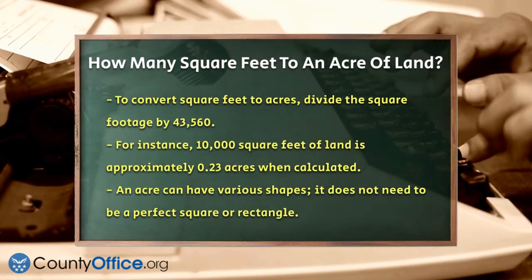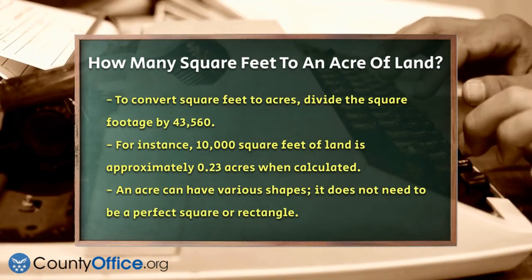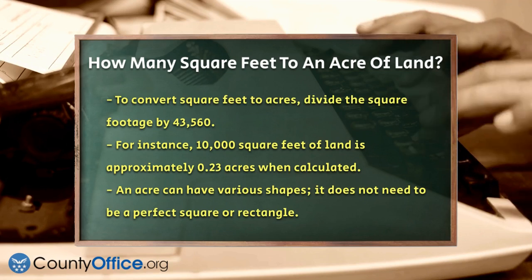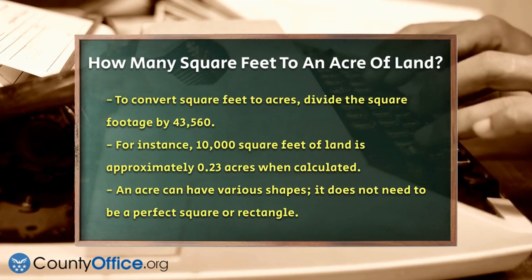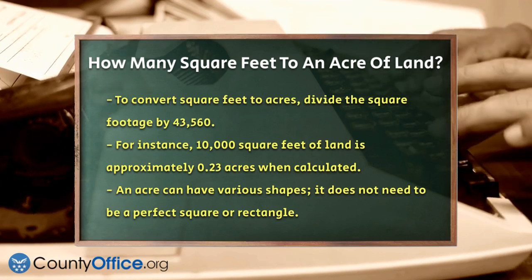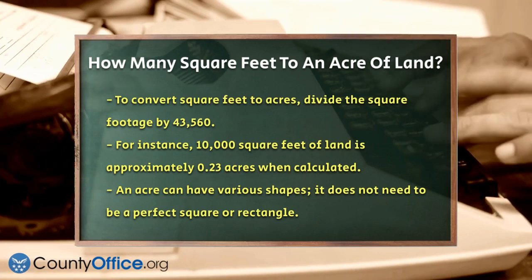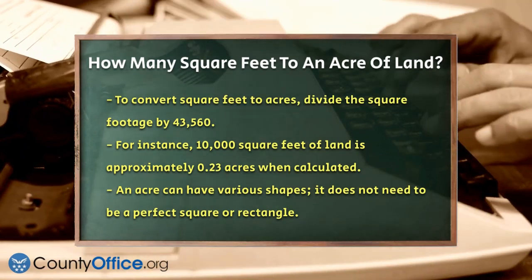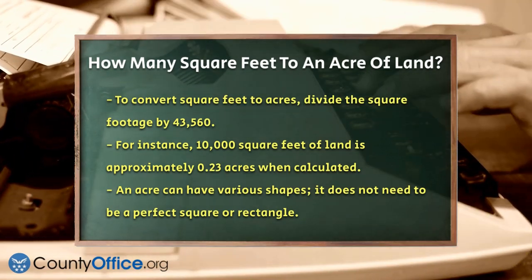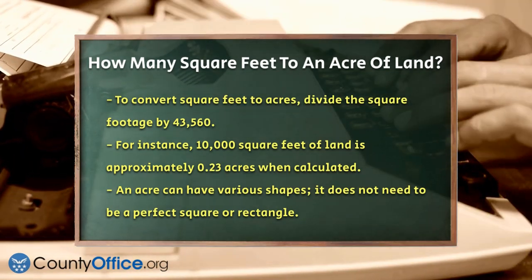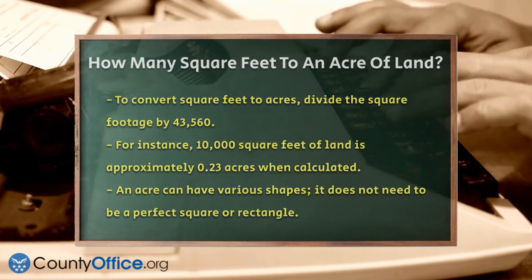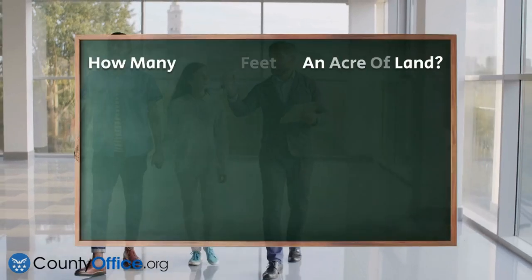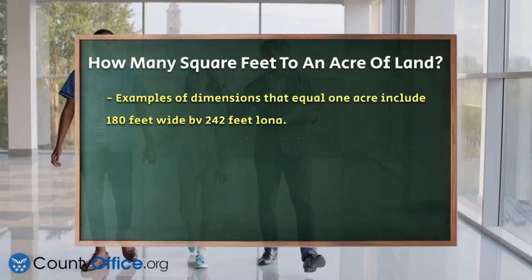It's important to note that an acre doesn't have to be a perfect square or rectangle — it just needs to cover an area of 43,560 square feet. So whether your land is 180 feet wide by 242 feet long, or any other combination that gives you the same total area, it's still one acre.